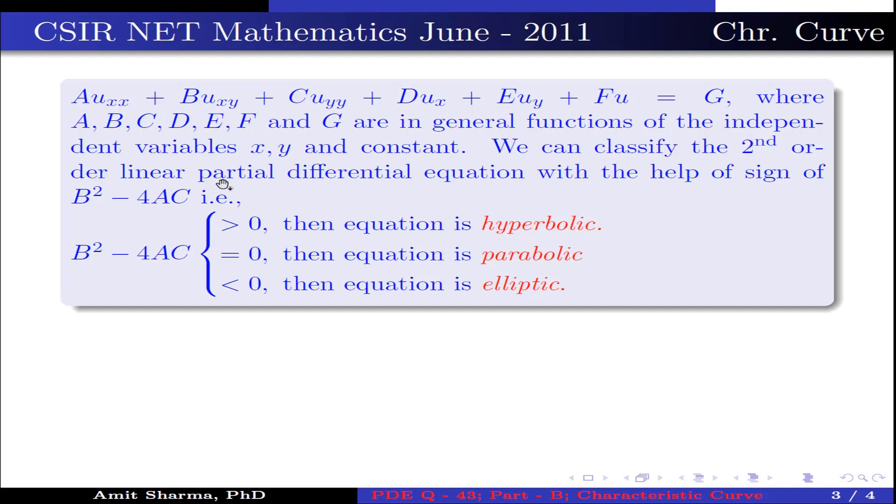We can classify second order linear partial differential equations with the help of sign of B² - 4AC. If B² - 4AC > 0, then equation is hyperbolic. If it equals 0, then equation is parabolic. If it is less than 0, then equation is elliptic.